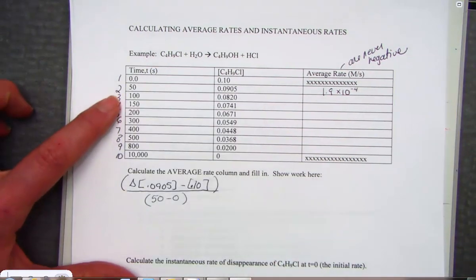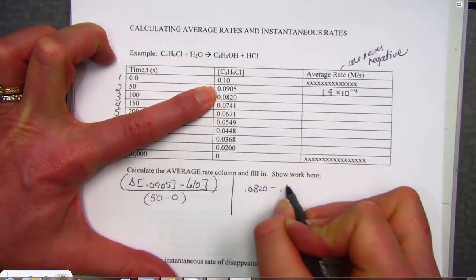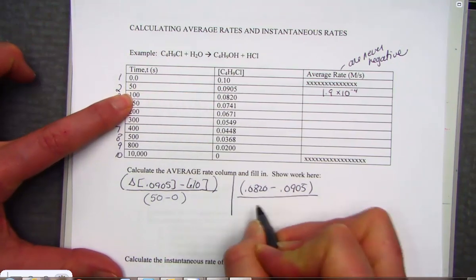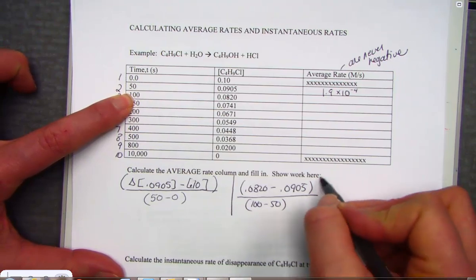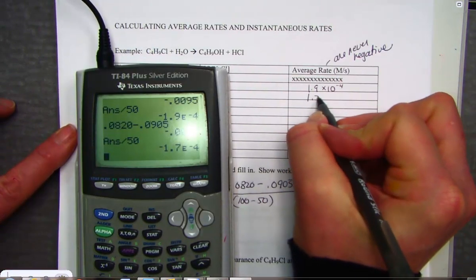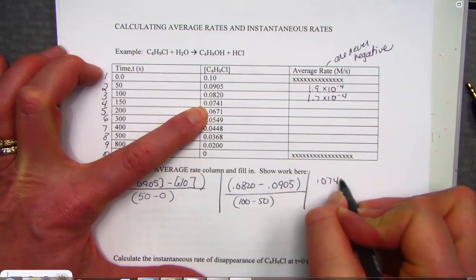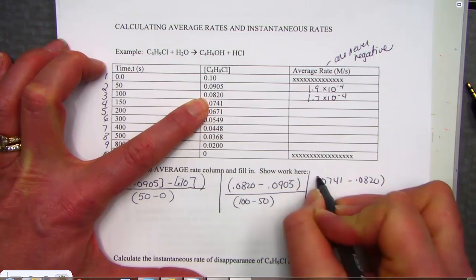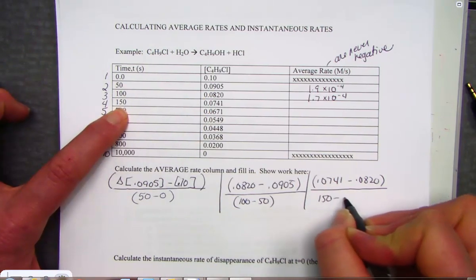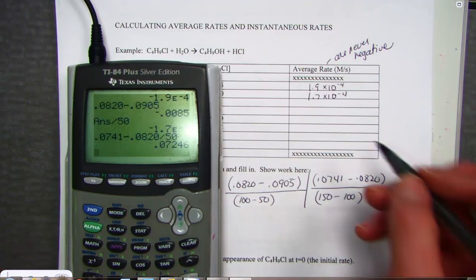We are going to continue that same process filling out the grid. So the next time interval we have a concentration 0.0820 from the previous concentration 0.0905. The change in molarity over the time interval. 100 minus 50 seconds. And we will get a number. And we will calculate that and simply report it into the grid here. 0.0820 minus 0.0905 divided by the time interval of 50 seconds. And now we have 1.7 times 10 to the negative fourth molarity per seconds. In the next time interval the concentration has decreased to 0.0741. From 0.0820 there is the change in concentration over the time interval. 150 over 100. And so let's calculate that. 0.0741 minus 0.0820 divided by the time interval of 50 seconds. And we get a value.